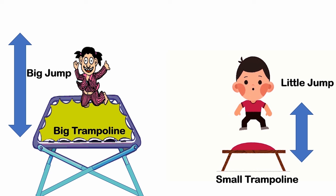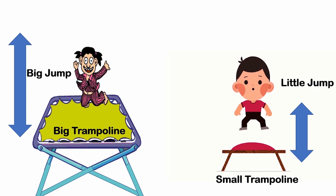Now the serious question comes why this small size particle emitting a blue light while the large size particle are emitting a red light. Let's understand this with the example of trampoline.